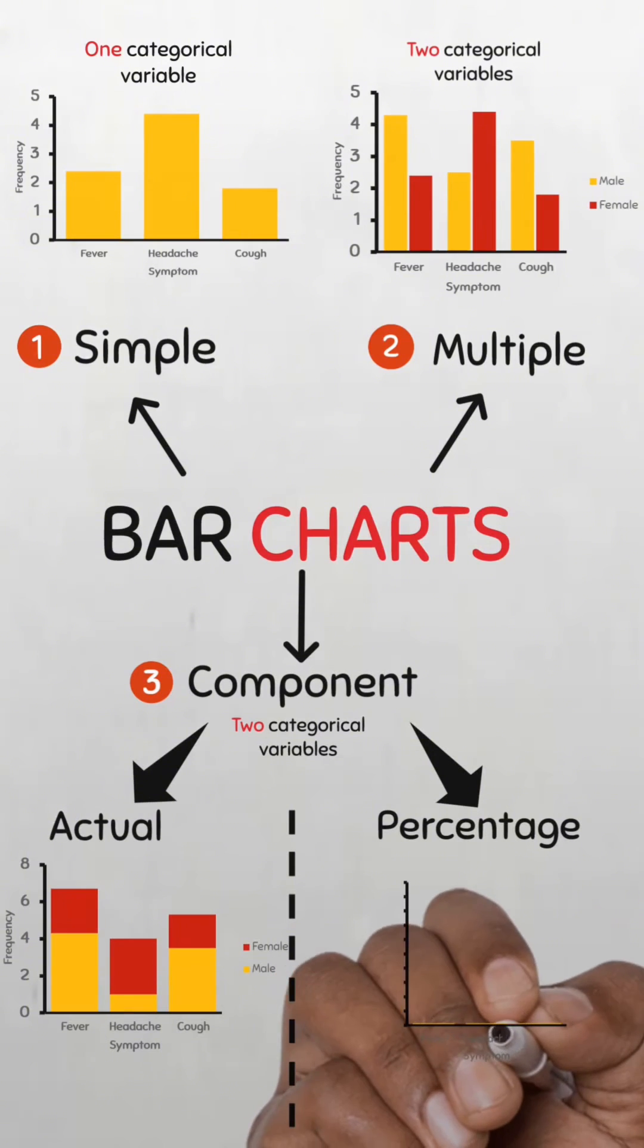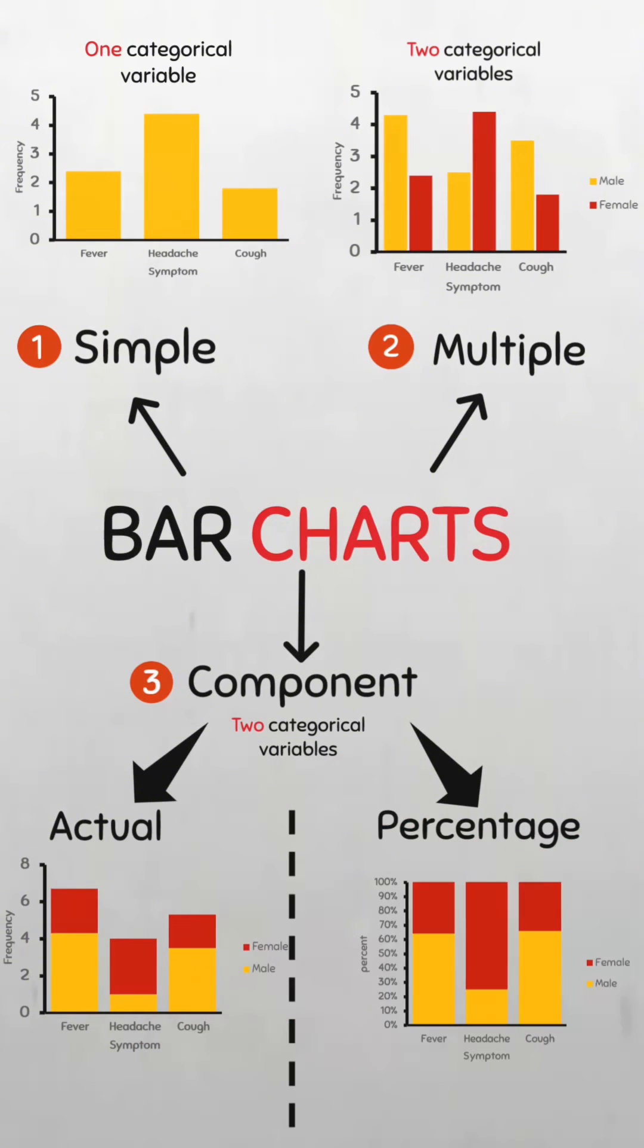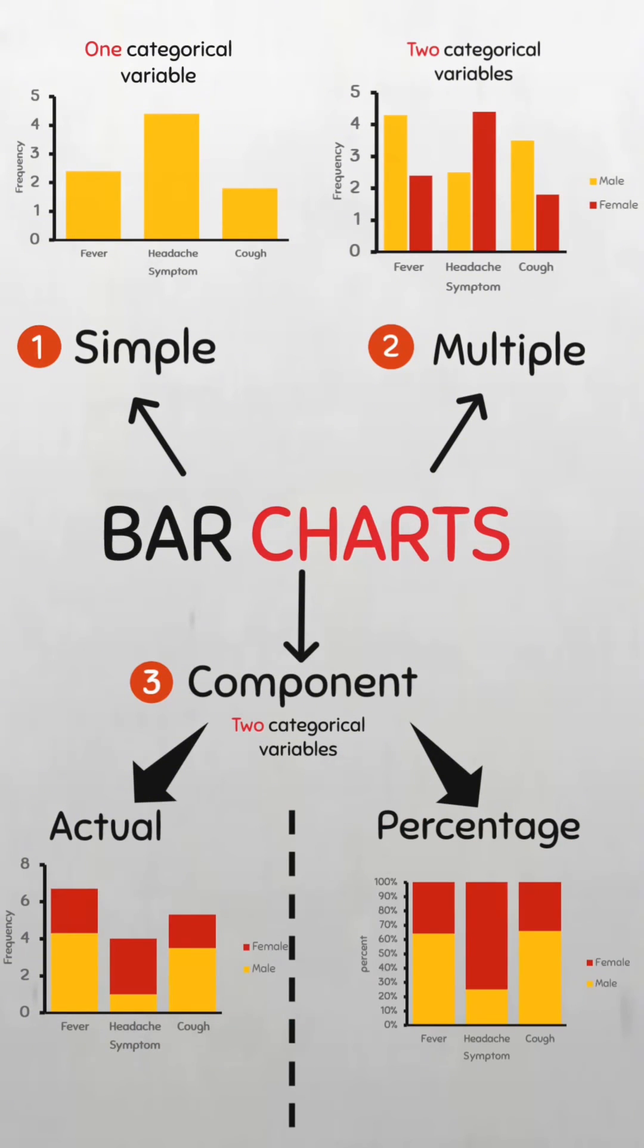In the percentage component bar chart, the length of the individual components represent the percentage of each component from the overall total of each category.